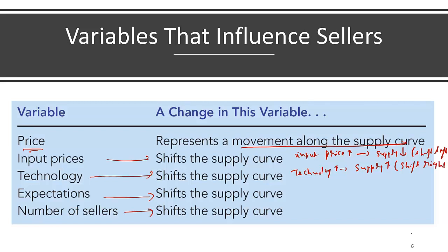Expectations: if prices are going to change tomorrow, you don't want to sell today if price is going up tomorrow. This will be a shift because the price is not changing today, but tomorrow. Finally, the number of sellers: as the number of sellers increases, the supply curve shifts right. So keep in mind — anything that affects the price of the commodity causes movement along the supply curve, also called change in quantity supplied. Anything that affects supply other than the price of the commodity causes a shift of the supply curve. A right shift means increase in supply; a left shift means decrease in supply.